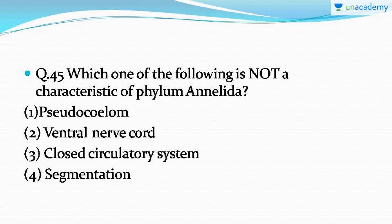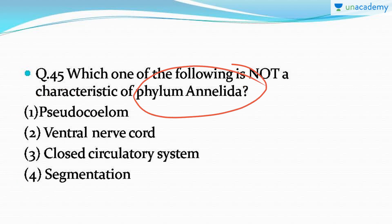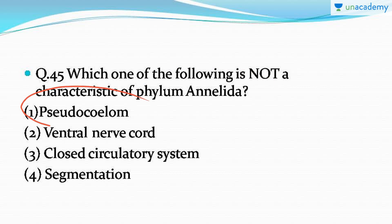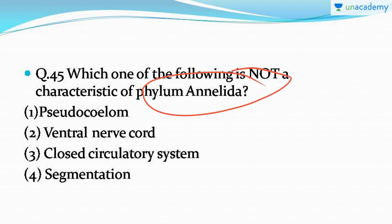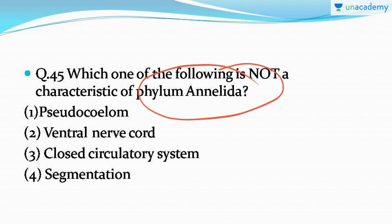Question number 45: which one of the following is NOT a characteristic of phylum Annelida? Note the word 'not.' The correct answer is option number one: pseudocoelom. Pseudocoelom is not found in Annelida but is found in Aschelminthes (roundworms). Annelida is the phylum to which the earthworm belongs. The other three characteristics — ventral nerve cord, closed circulatory system, and segmentation — are correct for Annelida; pseudocoelom is not.